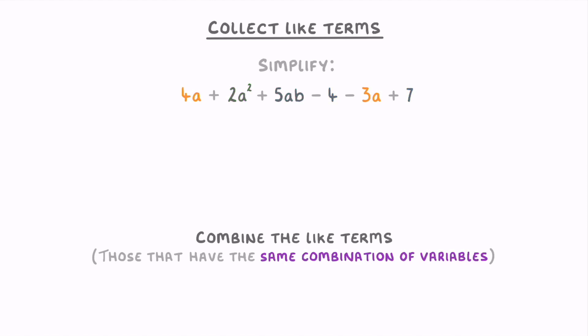So here, these two a terms are like terms because they both have just an a variable, whereas these two number terms are also like terms, because they're both just numbers.